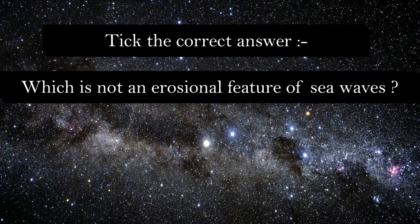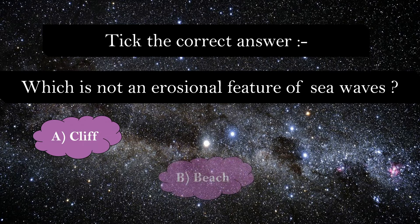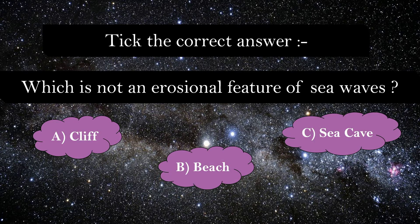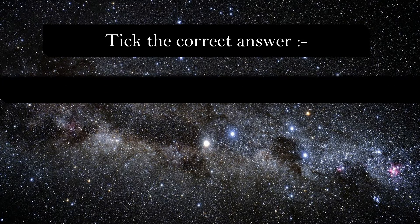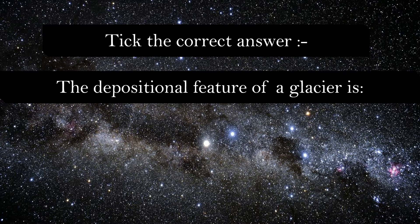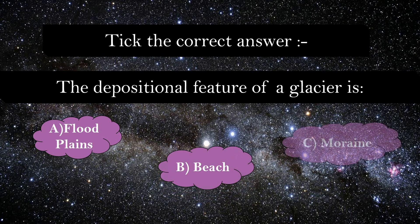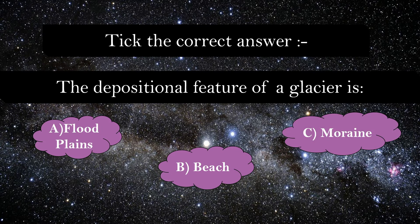Which is not an erosional feature of sea waves — cliff, beach, or sea cave? Sea cave and beach are both erosional features, so cliff is the correct answer. The depositional feature of a glacier is floodplains, beach, or moraine. Floodplains are formed by rivers and beaches are formed by sea. Thus, the answer is moraine.